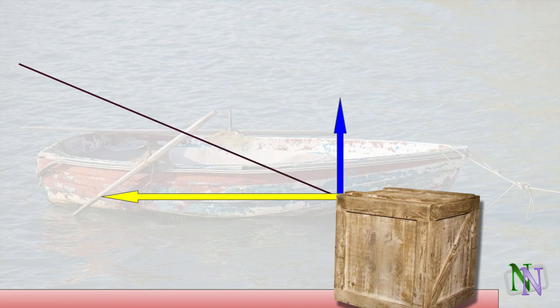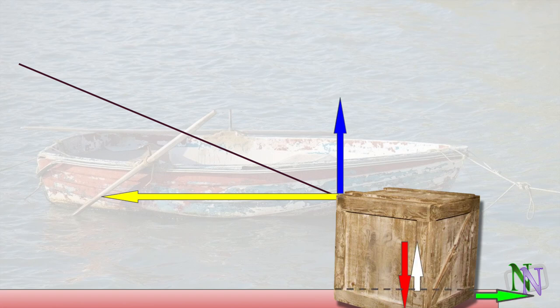This diagram shows only the resolution of the force in the rope into its horizontal and vertical components. To complete the diagram, we would have to add the weight of the box, the upwards reaction of the ground on the box, and the effects of friction opposing the motion of the box.